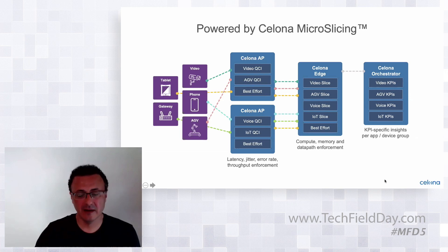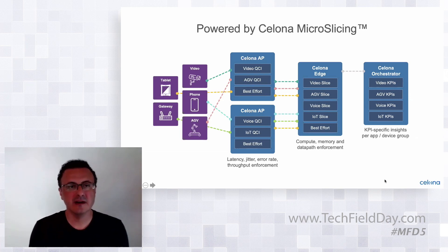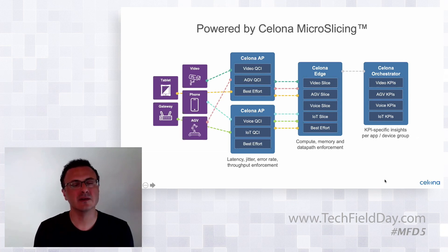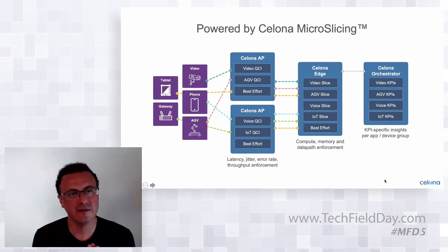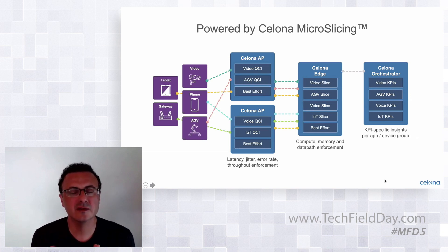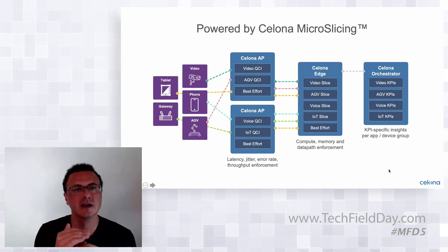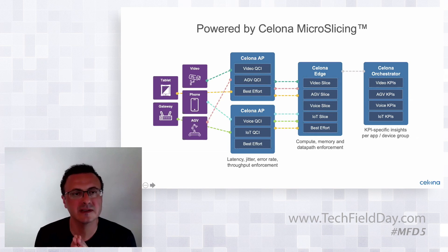Both, actually. The granularity of microslicing is per application level. So you can have multiple applications running on your device, and those applications can go over different microslices. So if you have your Zoom session or WebEx session and you want to have higher quality of service compared to your email and other traffic on the device, they can go over different microslices.